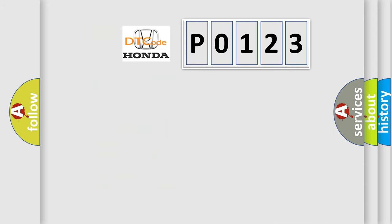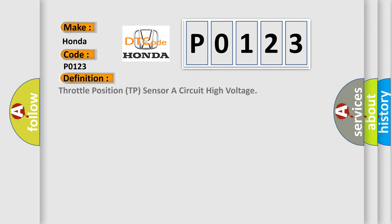So, what does the diagnostic trouble code P0123 interpret specifically? Honda car manufacturer. The basic definition is throttle position TP sensor A circuit high voltage.